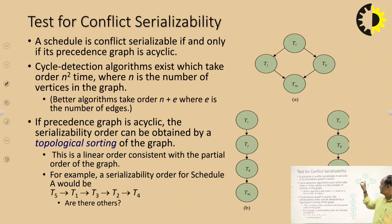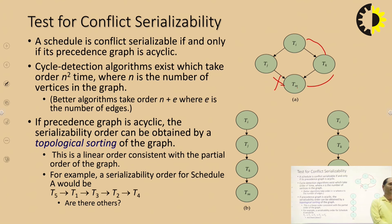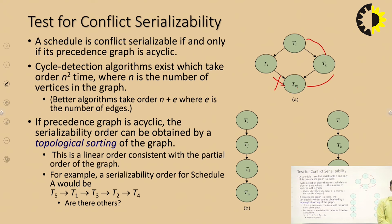If a cycle is found in the precedence graph, it is not conflict serializable. If no cycle exists — meaning we start from one node and cannot return to it — then the cycle breaks and the schedule is conflict serializable. A cycle detection algorithm exists that takes O(n²) time, where n is the number of vertices. If the precedence graph is acyclic, the serial order can be obtained by topological sorting.